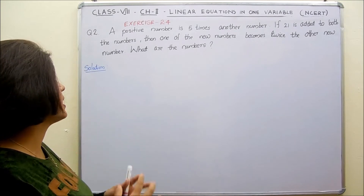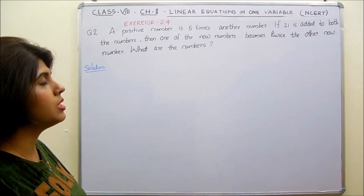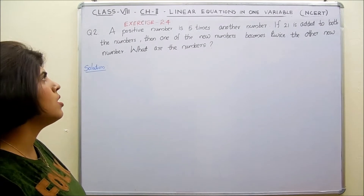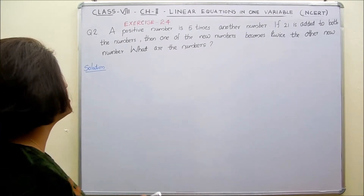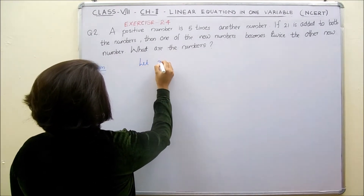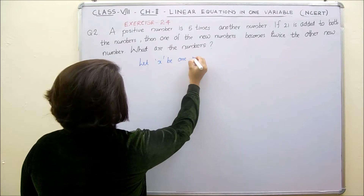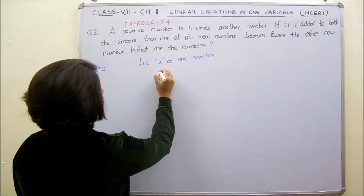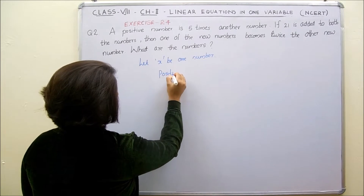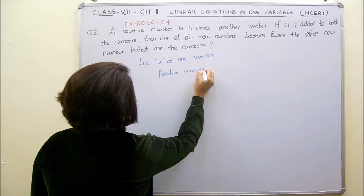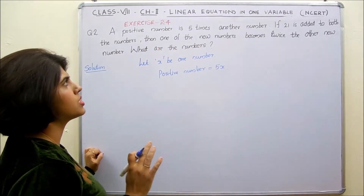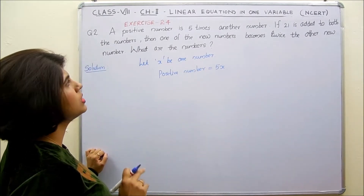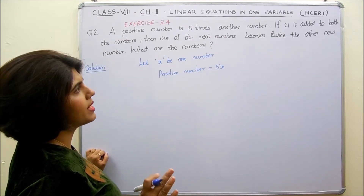Okay students, let's come to the second question. A positive number is 5 times another number. If 21 is added to both the numbers then one of the new numbers becomes twice the other new number. What are the numbers? Let x be one number. Then the positive number equals 5x, since a positive number is 5 times the other number. If 21 is added to both numbers, one of the new numbers becomes twice the other.